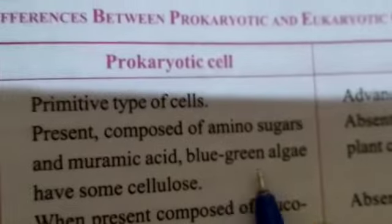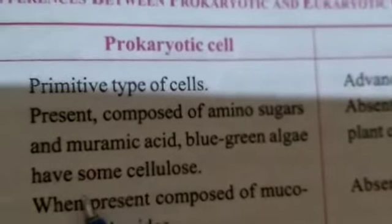For the prokaryotic column, write: present, composed of amino sugars and muramic acid. In blue-green algae, in some cases it is made of cellulose. For the eukaryotic column, write: absent in animal cell, present in plant cell, composed of cellulose. In animal cells it is absent; in plant cells the cell wall is made of cellulose.